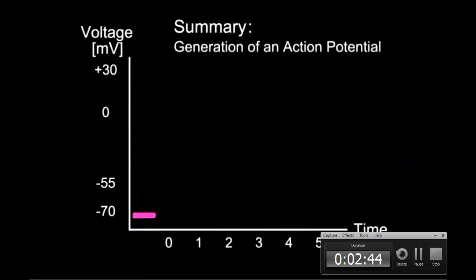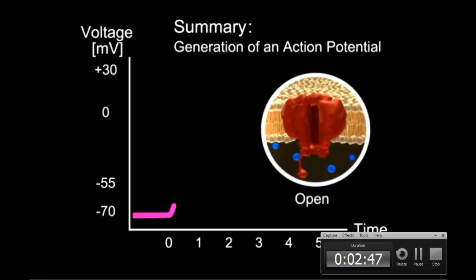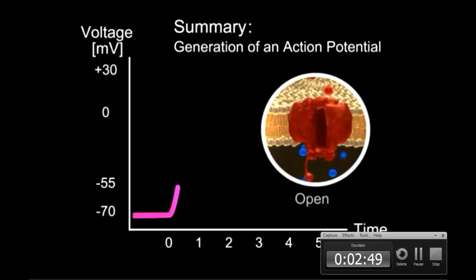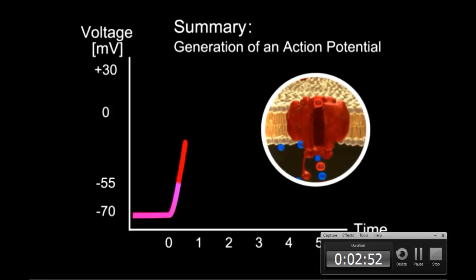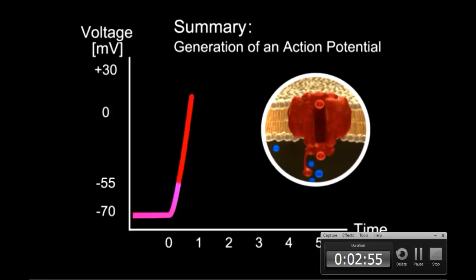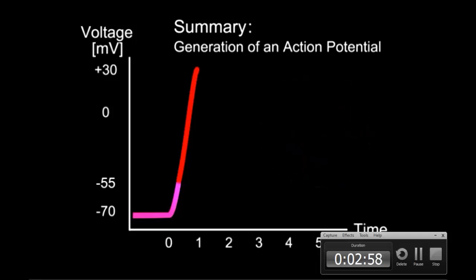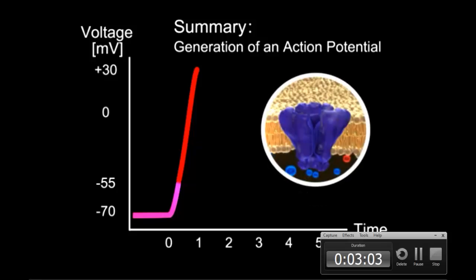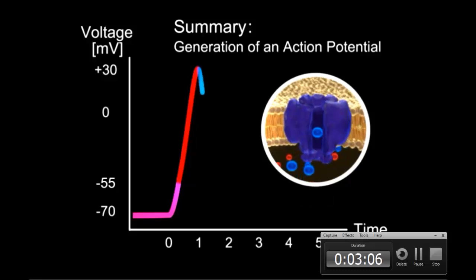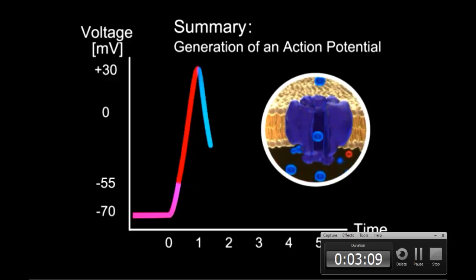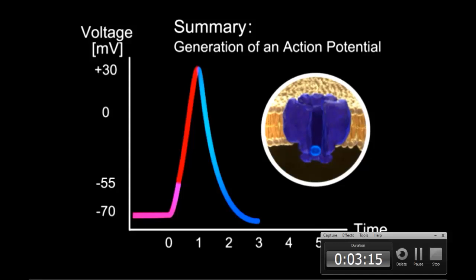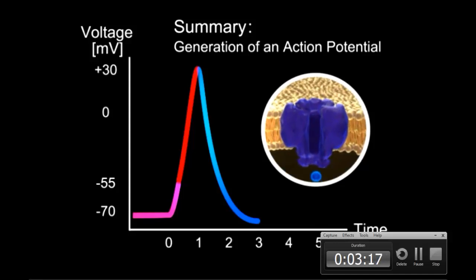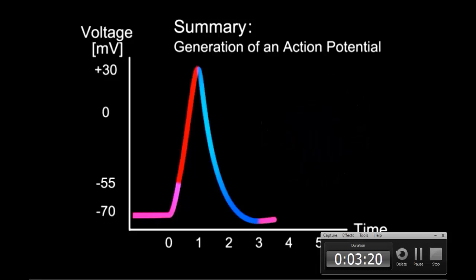Summary: A threshold stimulus opens voltage-gated sodium channels. Sodium ions diffuse into the axon, depolarizing it to plus 30 millivolts. Voltage-gated sodium channels then close and voltage-gated potassium channels open. Potassium ions diffuse out of the axon, repolarizing it to a negative value. The membrane potential briefly hyperpolarizes, then voltage-gated potassium channels close and the membrane returns to the resting state of minus 70 millivolts.